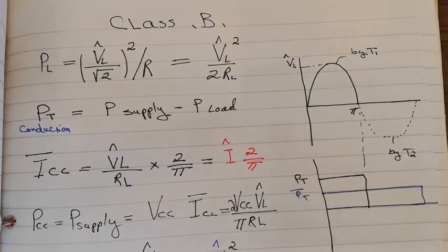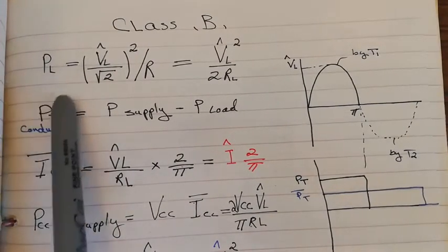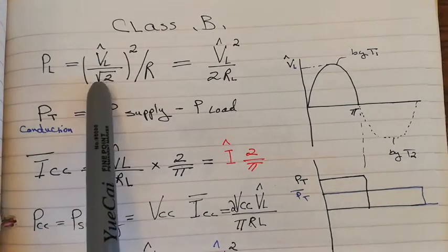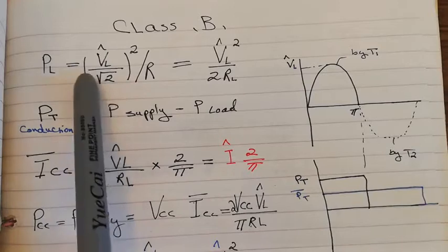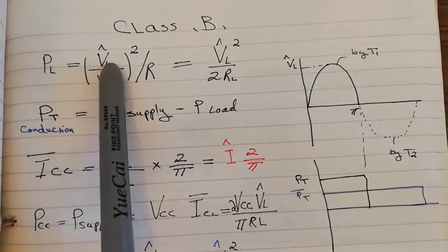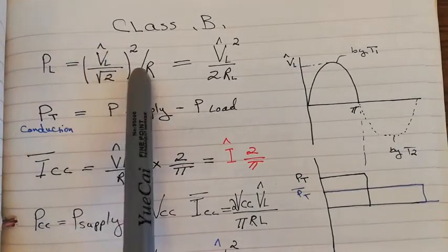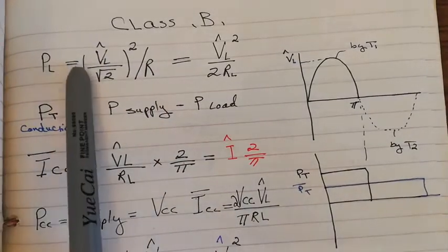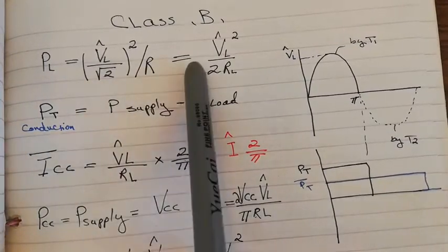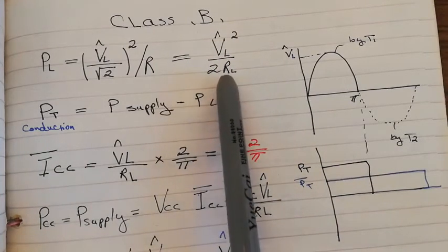The power of the load, as we know, is the RMS voltage squared divided by the load resistance. The RMS value is the peak divided by √2, so P_load = V_peak² / (√2)² / R_L, which simplifies to V_peak² / (2 × R_L).